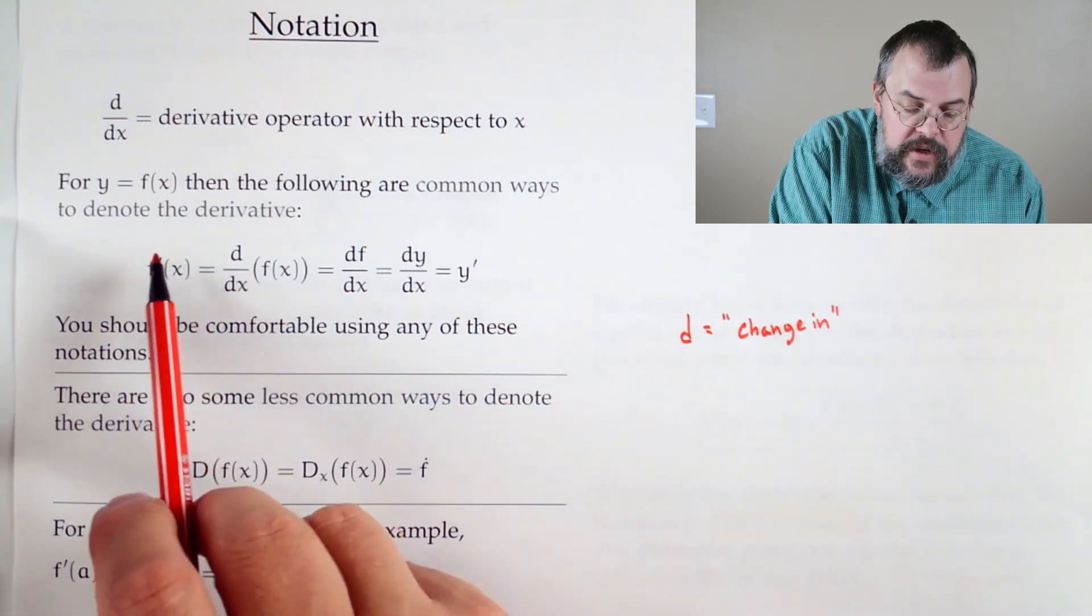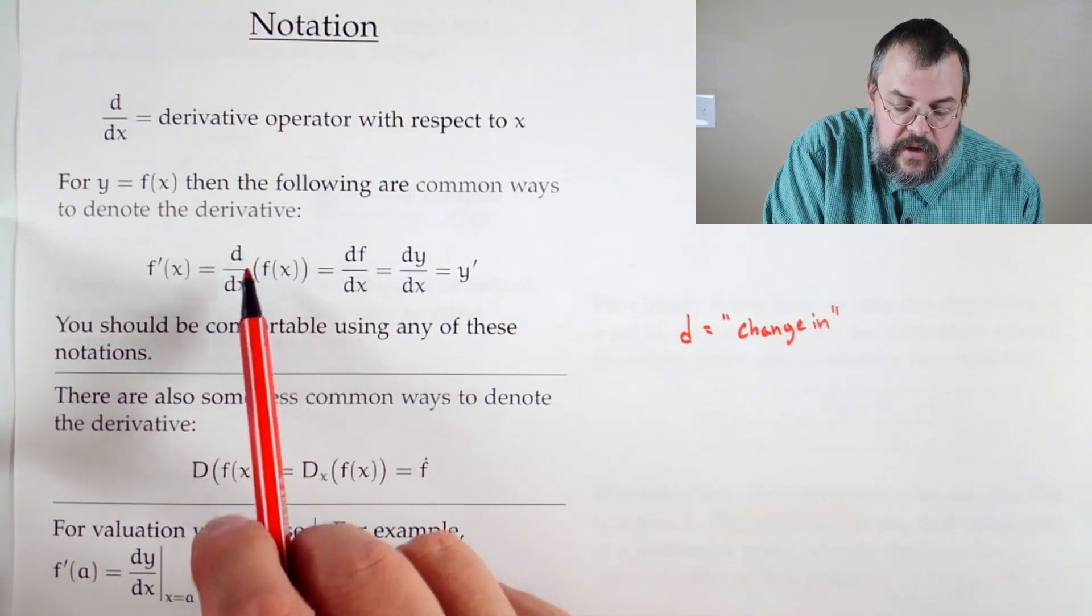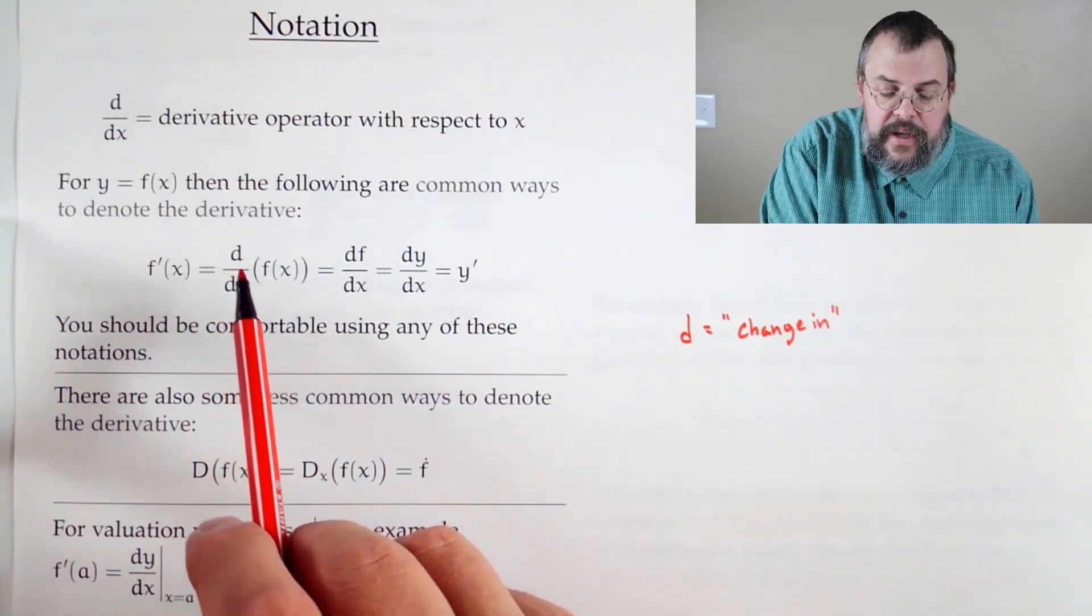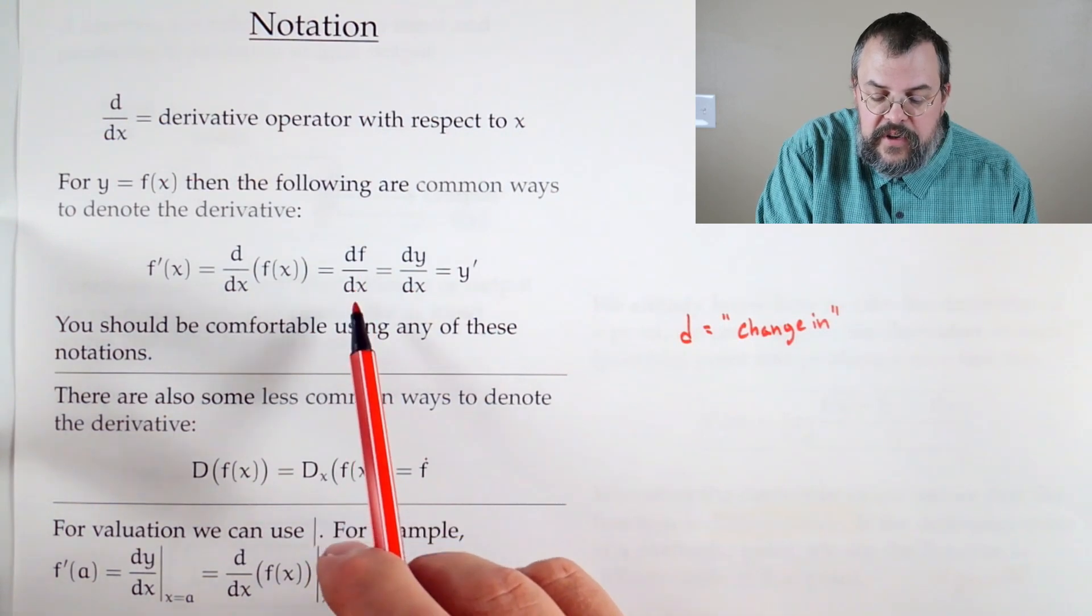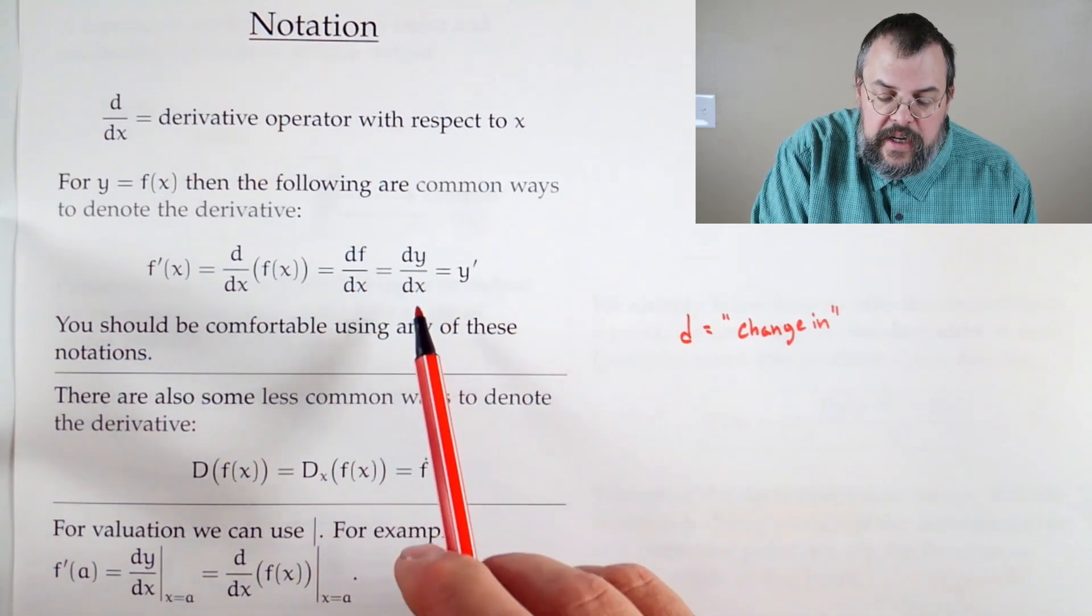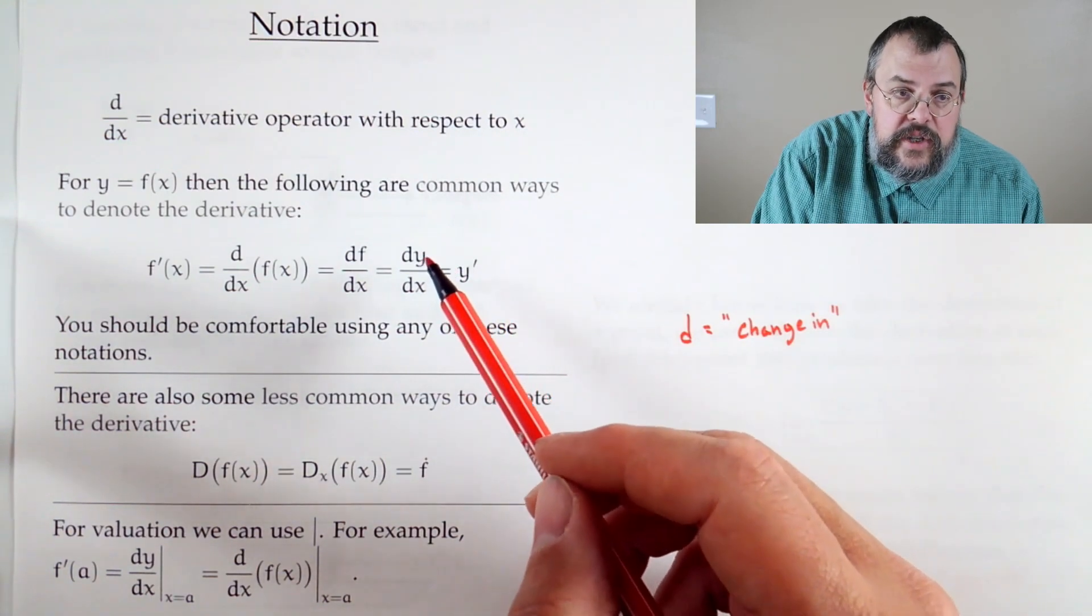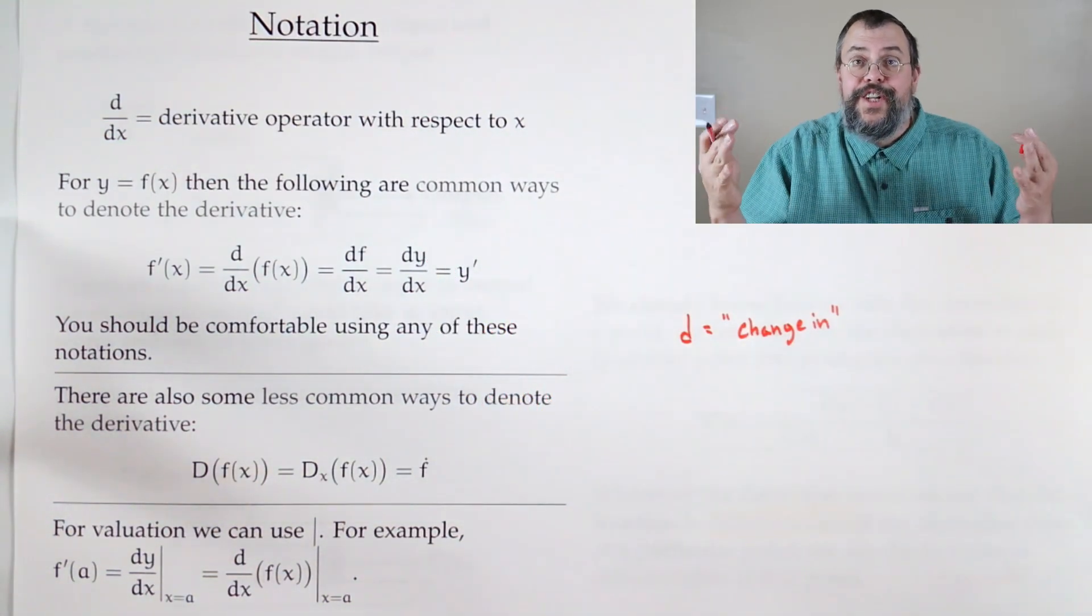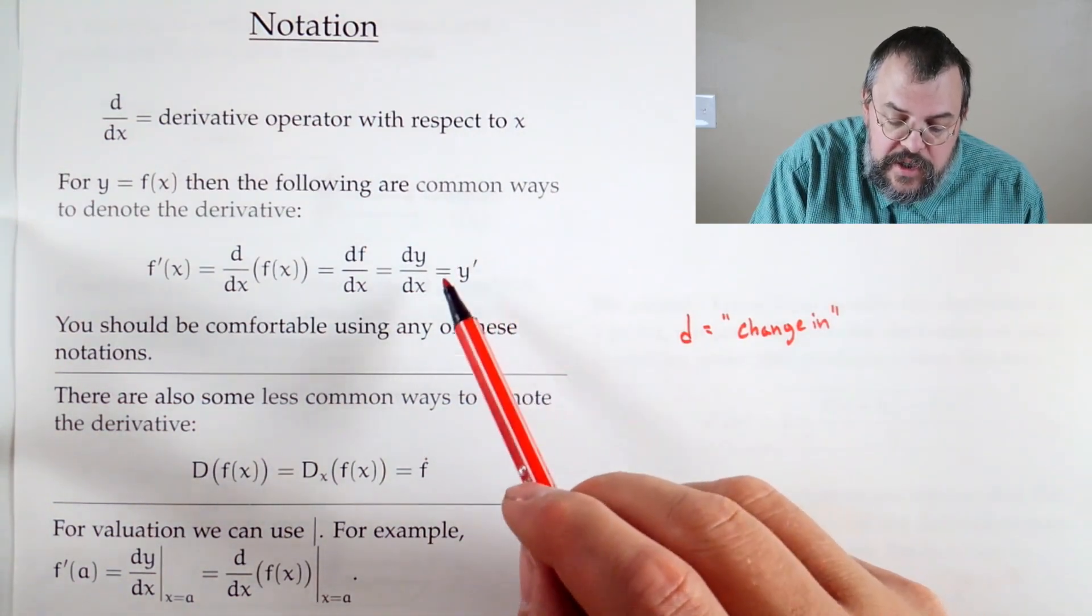So what does that mean? Well, if I have my function, the derivative f prime of x, I can think of how does this thing, which I call f of x, how is f of x changing as I change x? Sometimes it's written df dx. Sometimes it's written dy dx. See, you can think of it almost like a slope of a line. Change in y, change in x. Change in output, change in input.